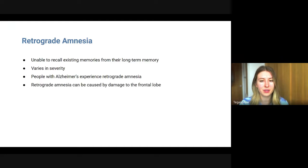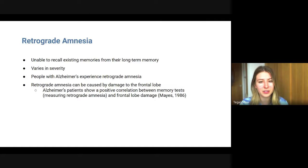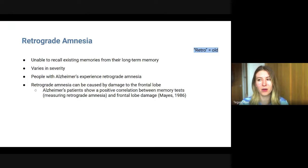Retrograde amnesia can be caused by damage to the frontal lobe. Alzheimer's patients show a positive correlation between memory tests that measure retrograde amnesia and frontal lobe damage, so there does seem to be a link between frontal lobe damage and retrograde amnesia. That was found by Mayes in 1986. A way to remember this: 'retro' means old, and people with retrograde amnesia cannot remember their old memories.